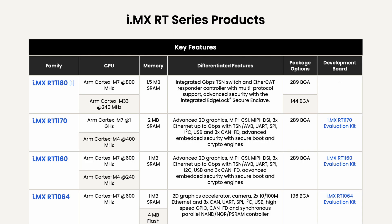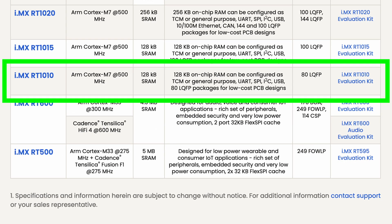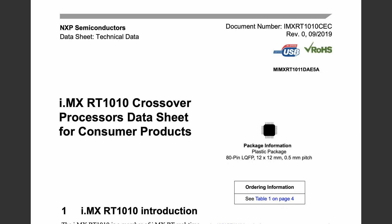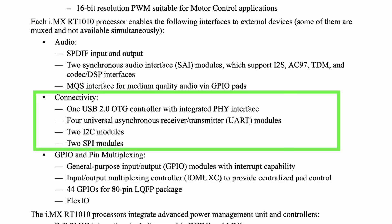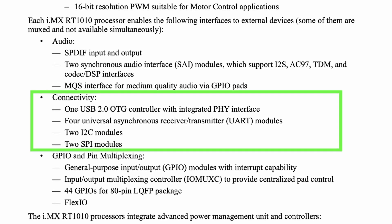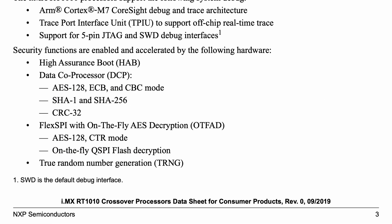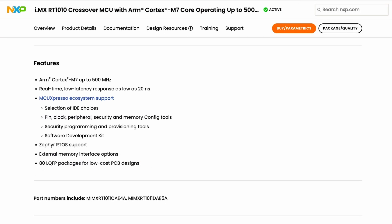Here you've got an ARM Cortex-M7 running up to 500 MHz in a 12mm 80-pin LQFP package with a wide range of connectivity interfaces including UART, SPI, I2C, and USB, plus rich audio features and security enhancements. It includes support for Zephyr RTOS and the MCUXpresso ecosystem.